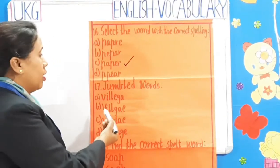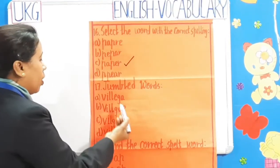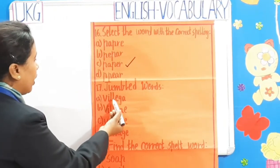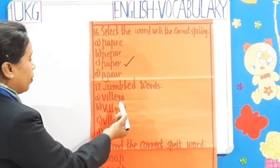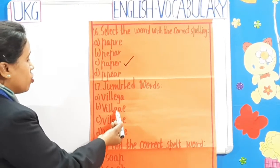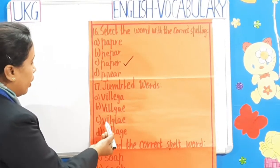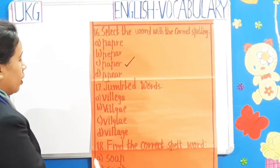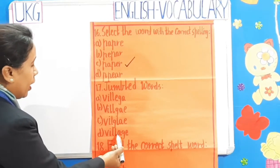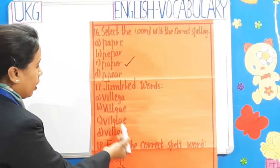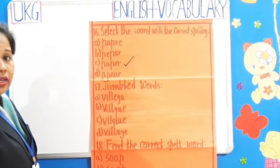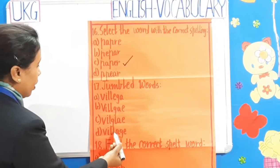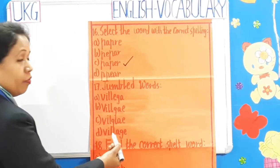Number 17: Jumbled words. Here, all the letters are jumbled. V-I-L-L-E-G-A-E, V-I-L-L-G-A-E, V-I-L-G-L-A-E, and V-I-L-L-A-G-E. So, which one is the correct answer? Yes, children — V-I-L-L-A-G-E. Village.